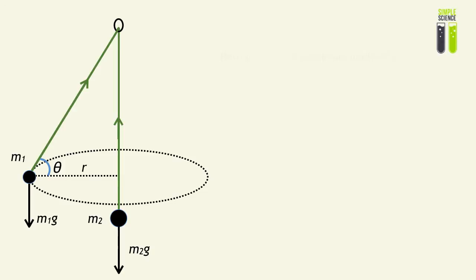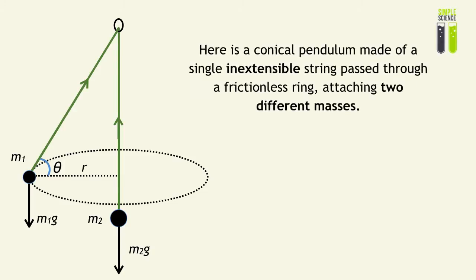To repeat that again, here's a conical pendulum made up of a single inextensible string passed through a frictionless ring. It attaches to two different masses where mass M2, the middle mass, is greater than mass M1.